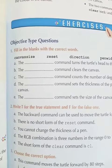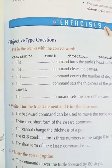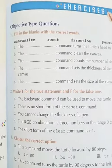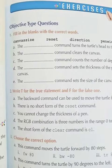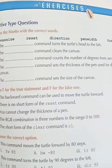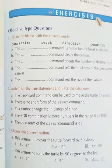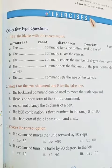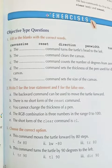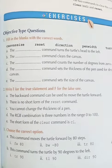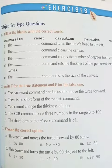First is fill in the blanks with the correct words. You have been given some words and you have to fill them in the blanks. Question number two: write T for the true statement and F for the false one. Question number three: choose the correct option — these are the MCQs. So you have to do question number one, two, and three in your book.